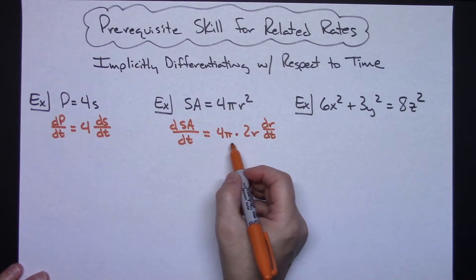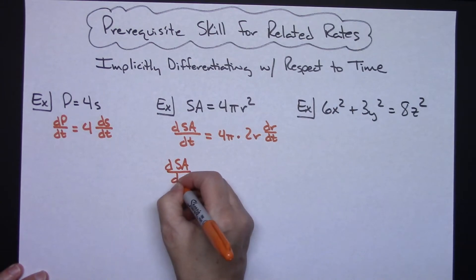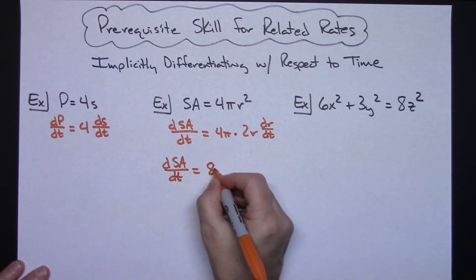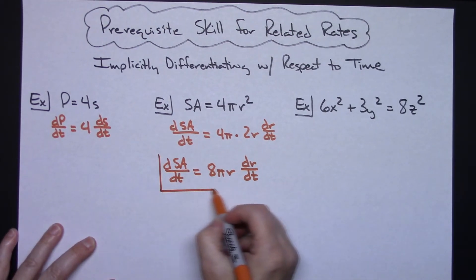Anytime you've got this, you're going to want to multiply those constants out in front and everything, so this is going to be dSA/dt and then an 8πr dr/dt for your final answer right there.